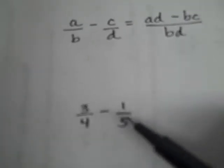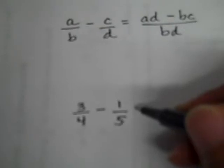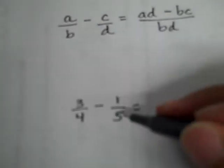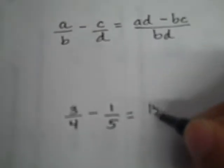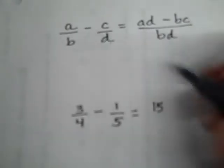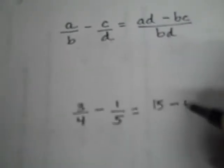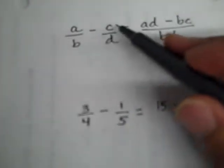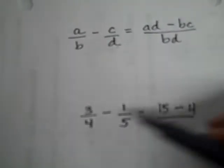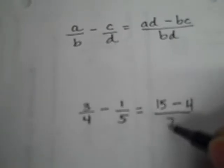Let's now apply that to a special case: 3 fourths minus 1 fifth. I'm going to set that equal to 3 times 5, which is 15. That's where I'm getting my a times d from, minus 4 times 1, which is 4. That's where I'm getting my b times c from, all over 4 times 5, which is 20.